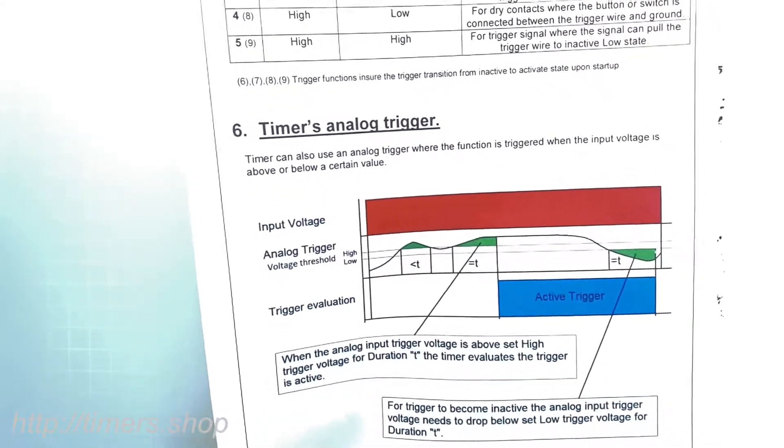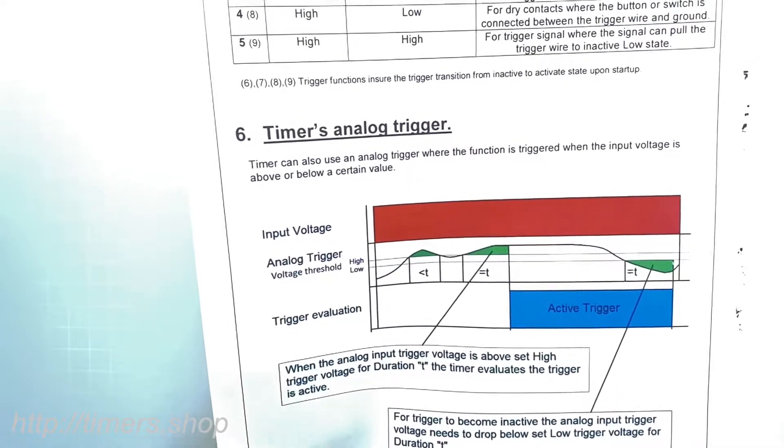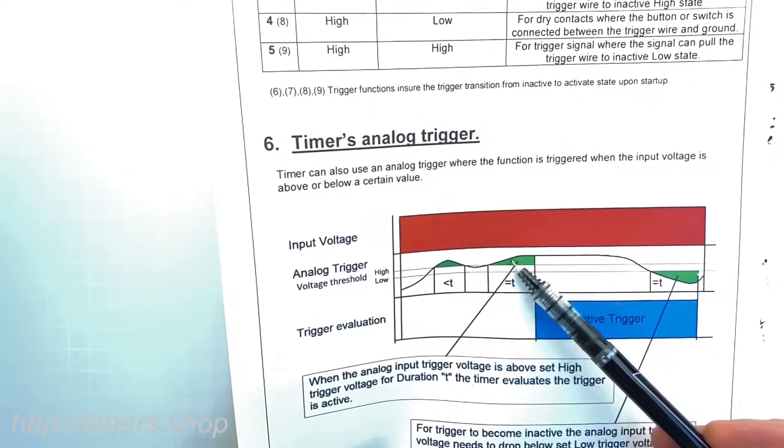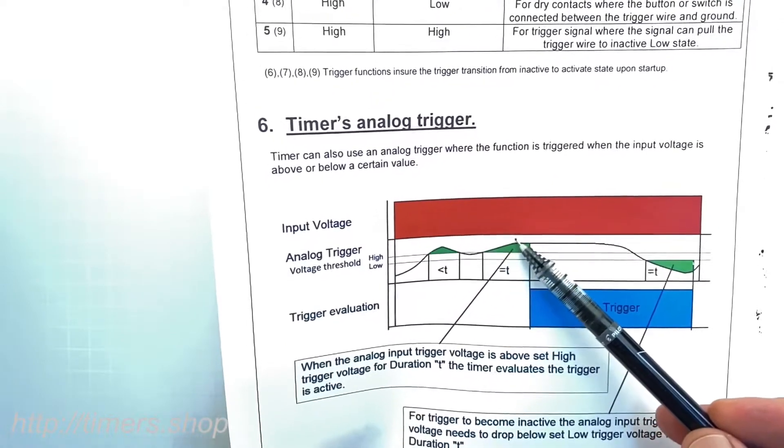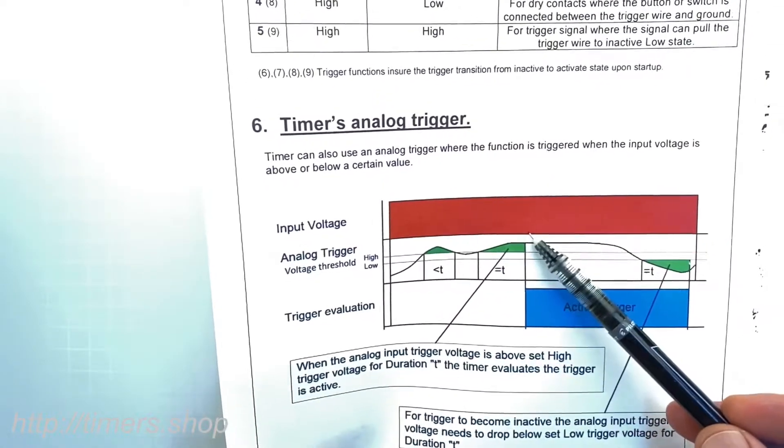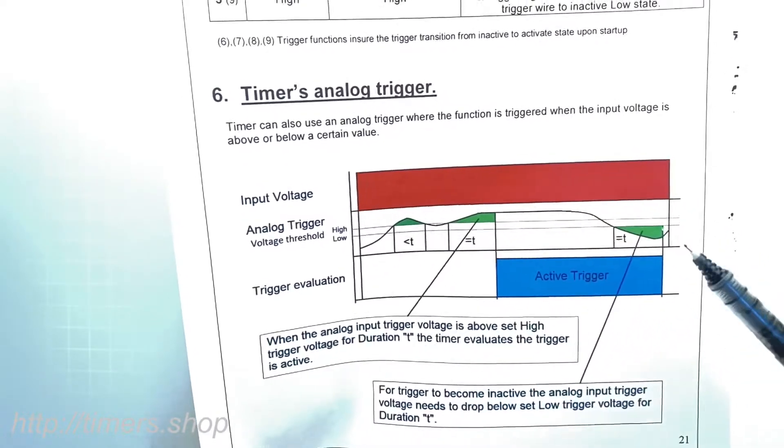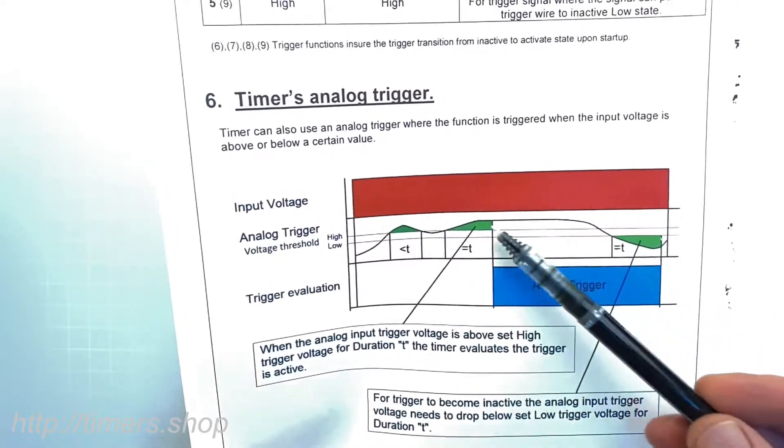For example, you can define 14 volts as your high trigger watermark. When the voltage rises above 14 volts for a period of time, the timer is going to treat it as an active trigger and you can trigger the function.